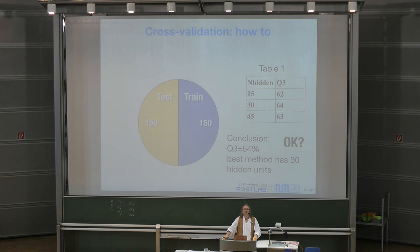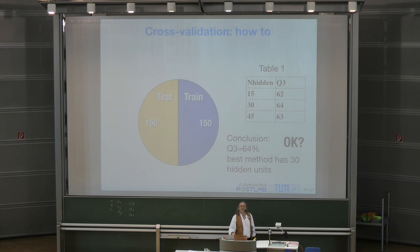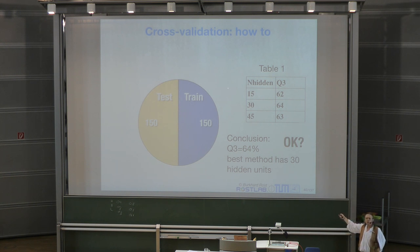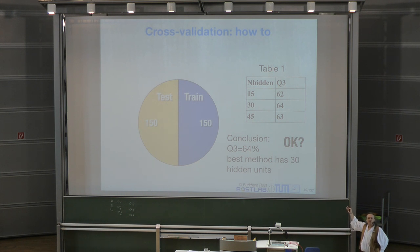A student asks if hidden units refers to samples from the test set or hidden layers of the neural network. They are hidden layers of the neural network — just one example to illustrate the broader point. Open any machine learning application, and you'll find almost every single one has some situation like this.